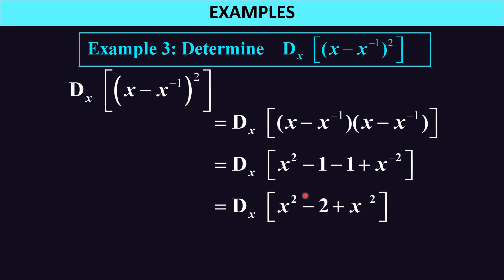Now we can differentiate: x squared gives 2x, the constant negative 2 gives 0, and x to the negative 2 gives negative 2x to the negative 3. So the derivative is 2x minus 2x to the negative 3.